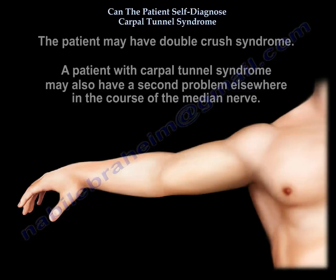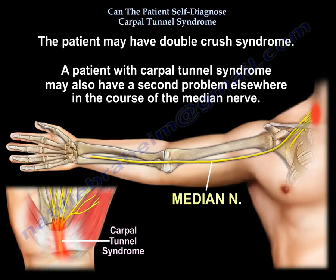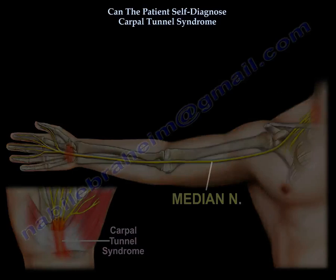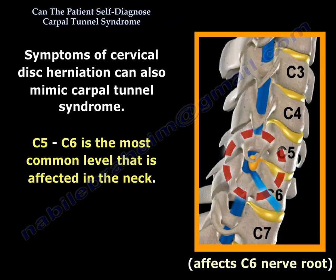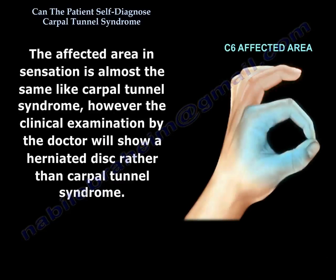A patient may have double crush syndrome — for example, a patient with Carpal Tunnel Syndrome may also have a second problem elsewhere along the course of the median nerve. Symptoms of cervical disc herniation can also mimic Carpal Tunnel Syndrome. C5-C6 is the most common level affected in the neck, and the affected area in sensation is almost the same as Carpal Tunnel Syndrome. However, clinical examination by the doctor will show a herniated disc rather than Carpal Tunnel Syndrome.